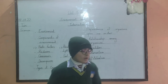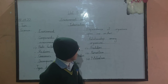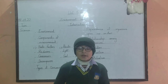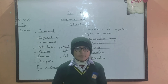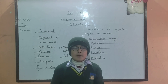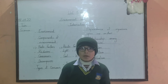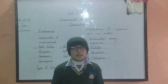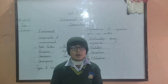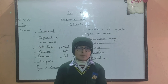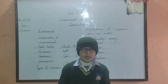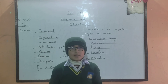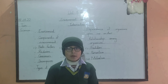Relations among organisms — there are three relations: predation, parasitism, and mutualism. Predation is a relation in which one organism kills the other organism. For example, a lion kills the deer.